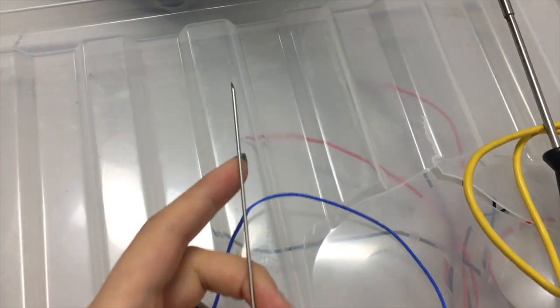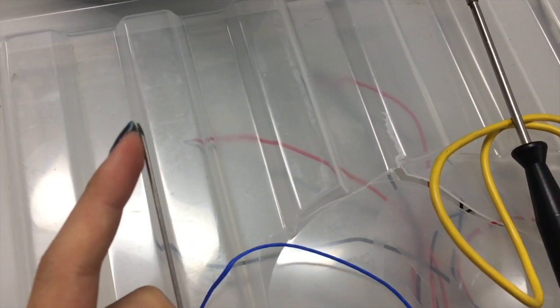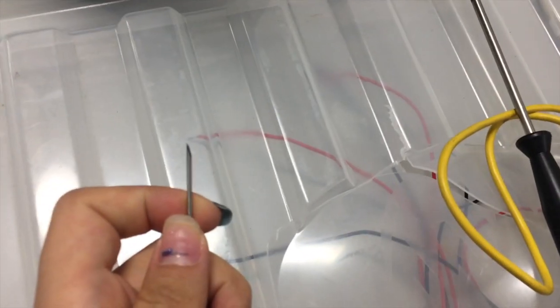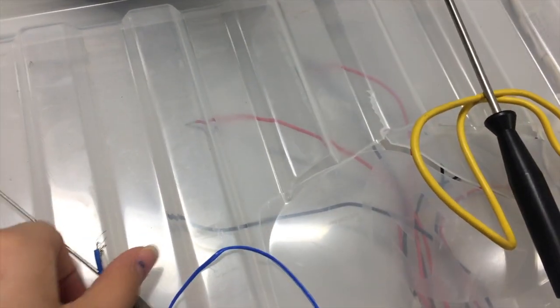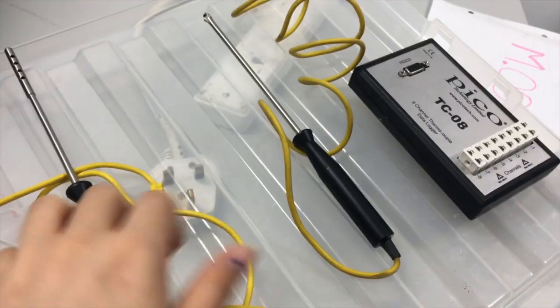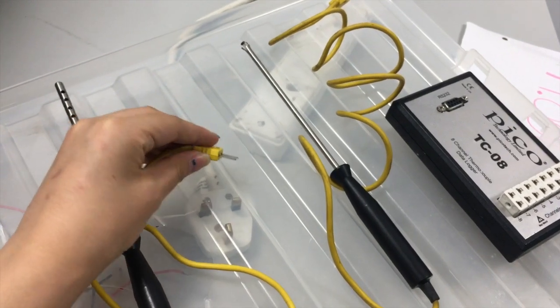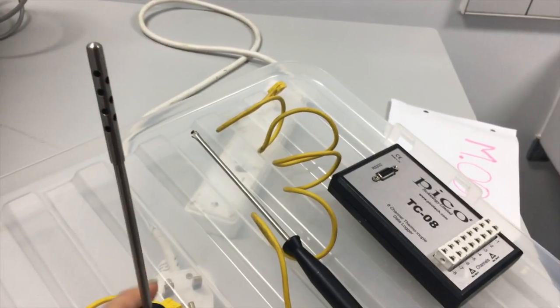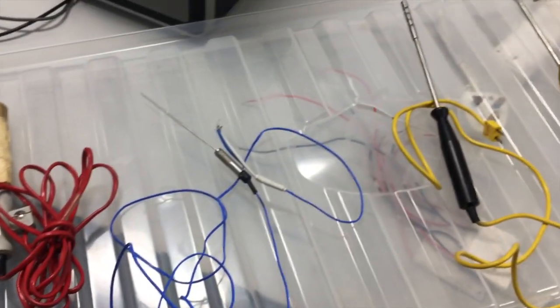This one is similar. It's smaller and you can see that it's kind of angled at this end. These two are similar. You connect this end to the meter and you put this on the surface and measure the temperature. So these are the thermocouples we are using.